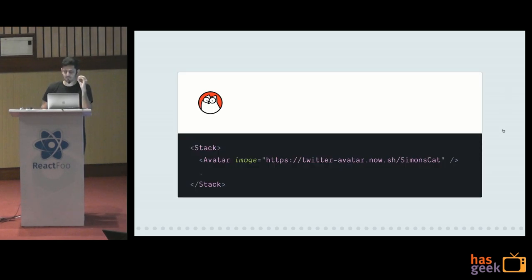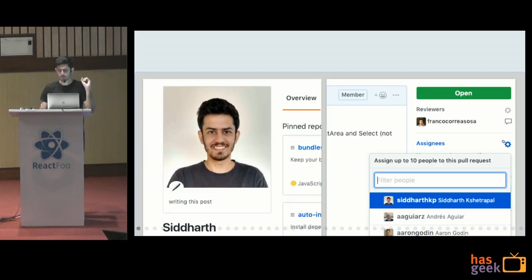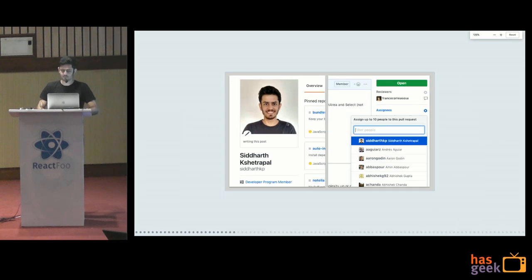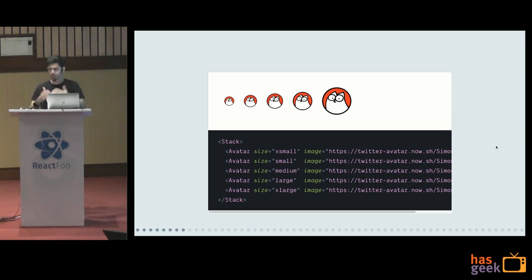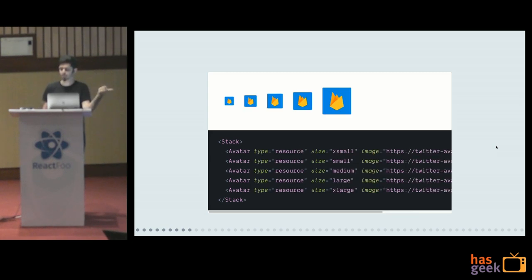Tip number three. I have this avatar component with Simon's cat photo. How avatars usually go is you have a bunch of them — a user avatar and a resource or application avatar, say with a Firebase logo. You usually see avatars in a bunch of places, like on GitHub where there's a super big one and tiny ones, so you have a bunch of sizes. We put all of those out using t-shirt sizes — extra small, small, medium, large, extra large — because you can encode t-shirt sizes to pixel values and get a fixed enum. Because the avatar component is the same, you get the same sizes for free for the application one.